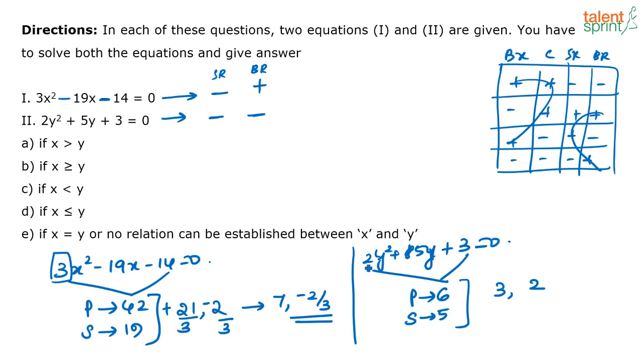So what are the roots that we are looking at? See, here the coefficient of y squared is 2 or the value of a here is 2. So 3 by 2 and 2 by 2 are the roots that I am looking for and both are going to be negative. So the value of y here is minus 3 by 2 and minus 1. When you compare the roots, in any case, the value of x will always be greater than y.